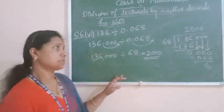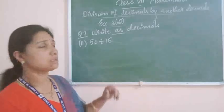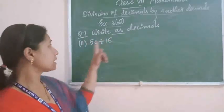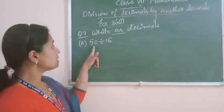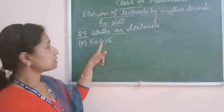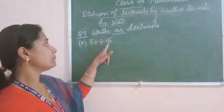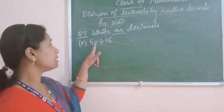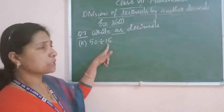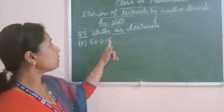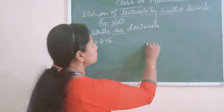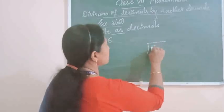Now let me explain question number 7: Write as decimal. The second question given here: 50 divided by 16. Here both numbers are natural numbers — dividend is a natural number and divisor is also a natural number. For finding the decimal of this, you just do the division.